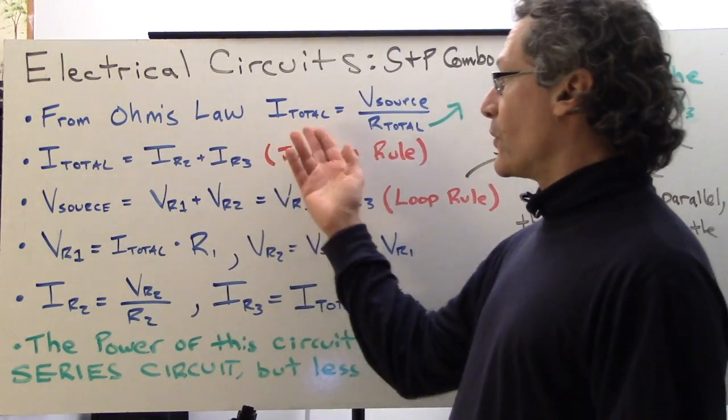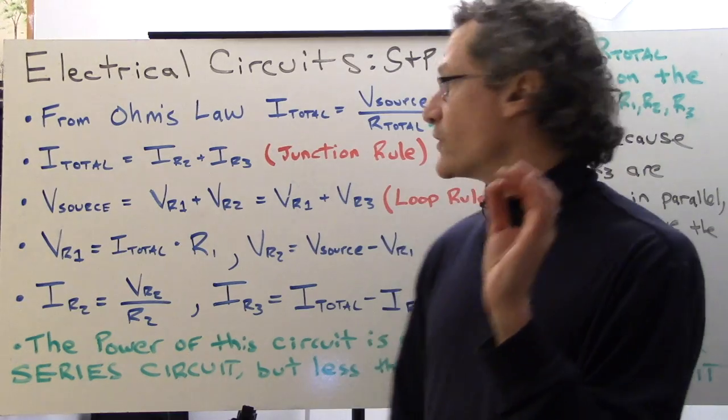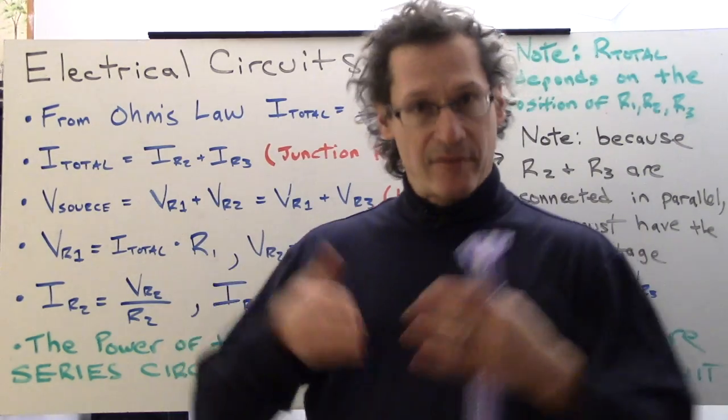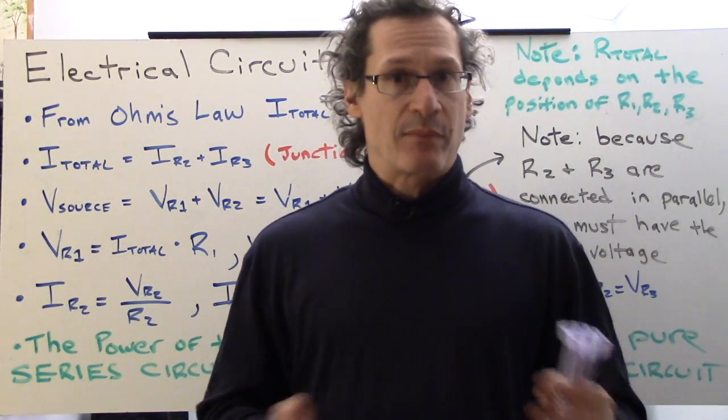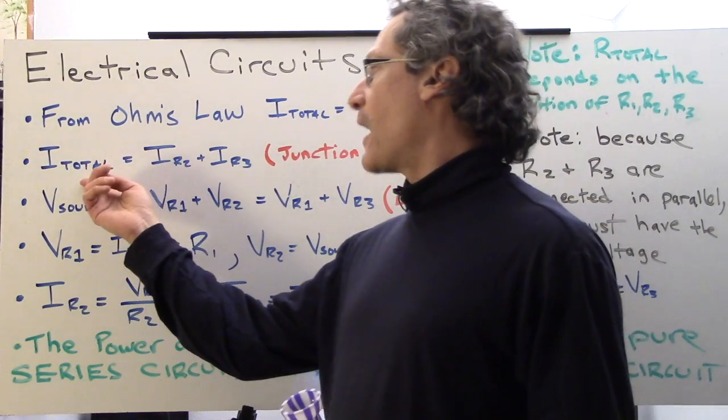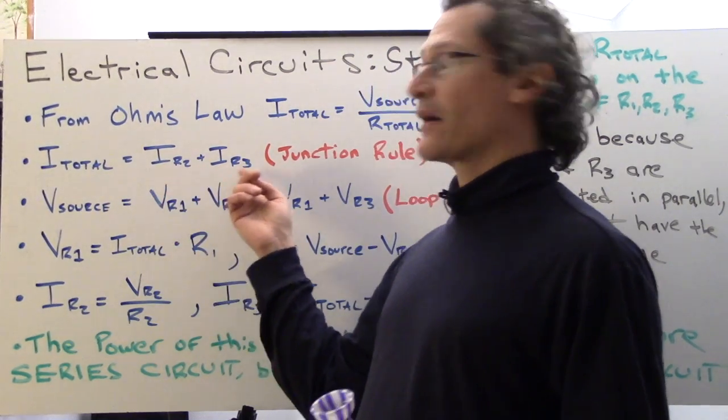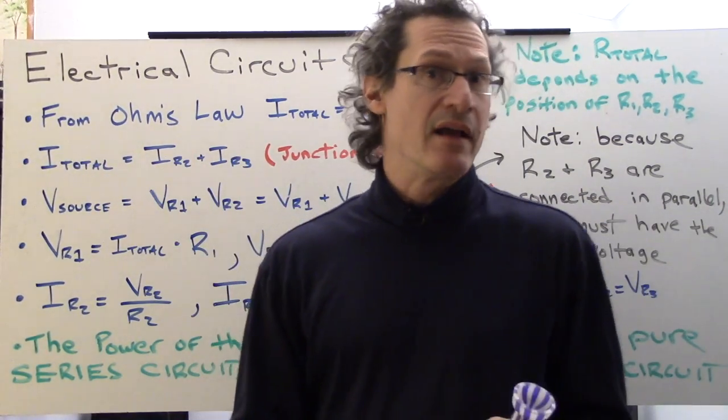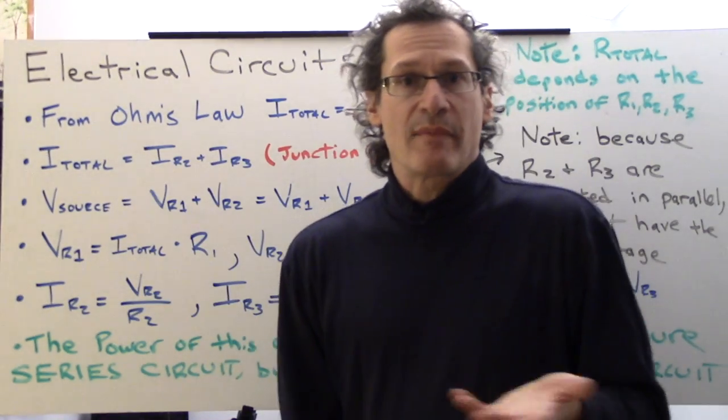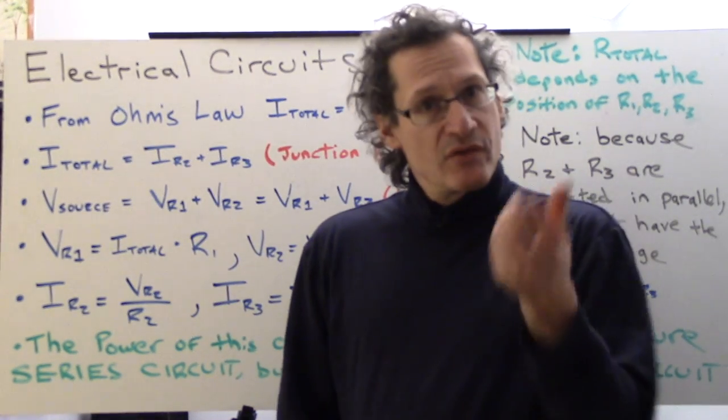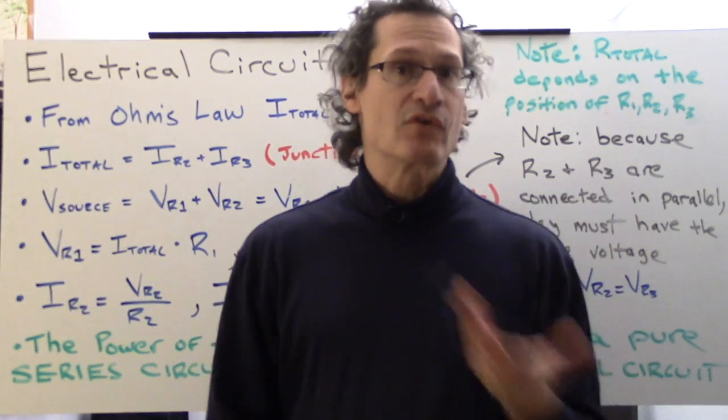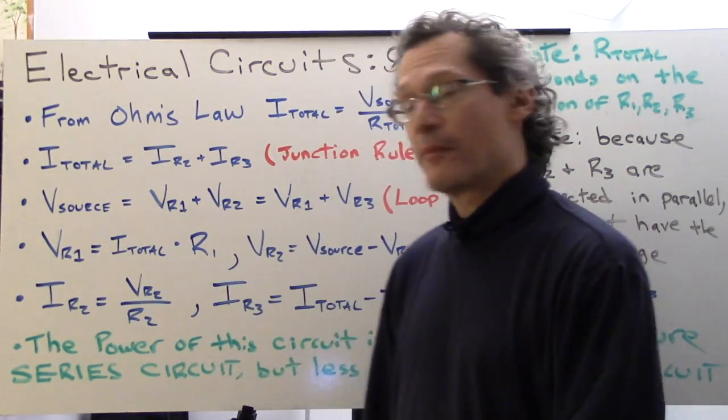Once you have I total, we note that from what's called the junction rule, meaning that the current branches into the separate resistors, I total is IR2 plus IR3. So it's a simple little equation that we can write. By analyzing circuits, it's all about really writing little equations that we can then group together to help solve any circuit type problem and find all the values.